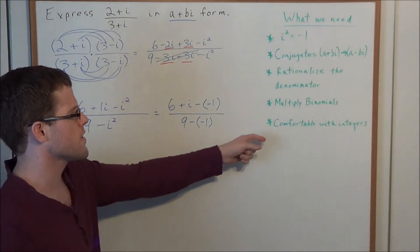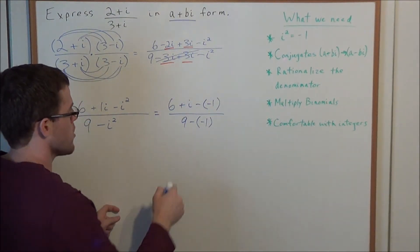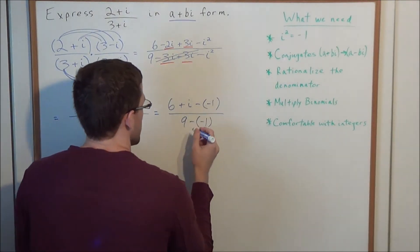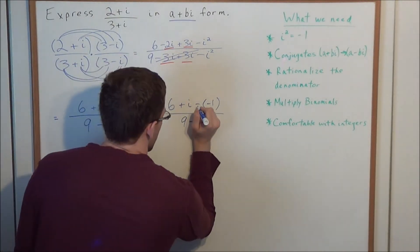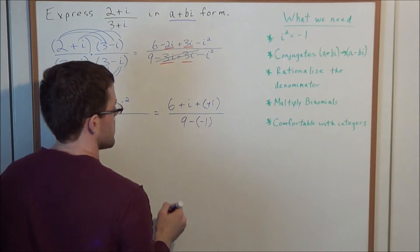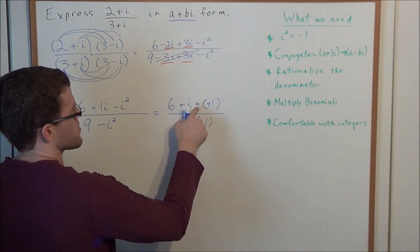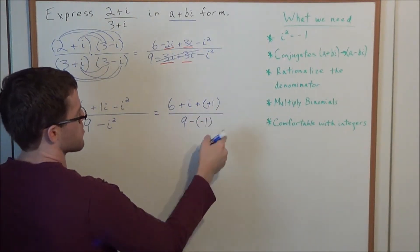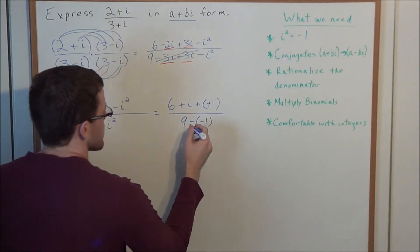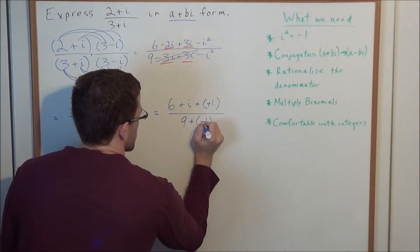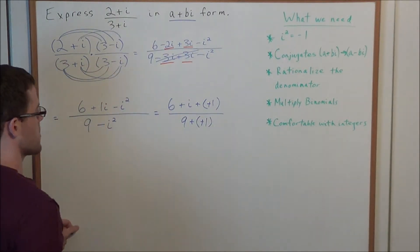But now keep in mind, once again, this is the integer part coming in. We're subtracting a negative 1. Subtracting a negative 1 is the same thing as adding 1. So we could turn this into a 6 plus i plus 1. And by the same reasoning, we could do the same thing in the denominator. And this gives us 9 plus 1 in the denominator.